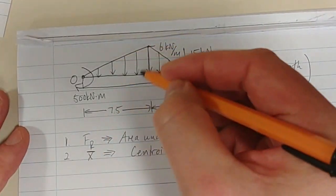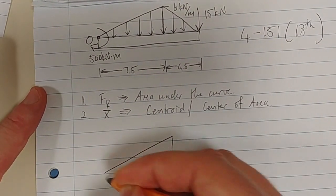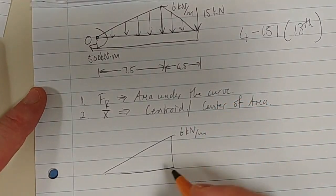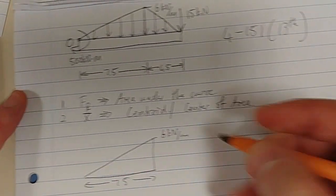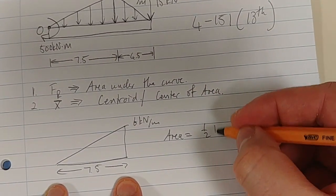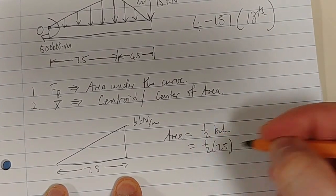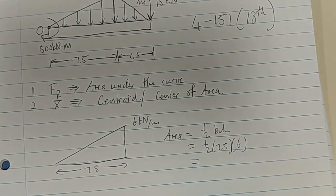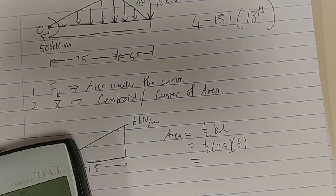We can split this area into two triangles. The first one has a value of 6 kN per meter and length of 7.5 meters. What is the area? Simply half base times height, which is half times 7.5 times 6. Now I just need to find my calculator.